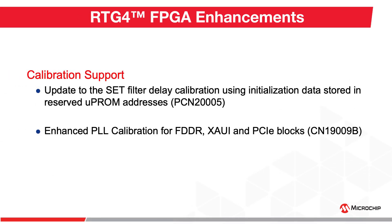There are a couple of RTG4 calibration updates with this release. The set filter delay calibration is updated using initializing data stored in reserved UPROM address. If the user is migrating their existing designs that contain UPROM to Libero V12.4, the complete design will be invalidated. Refer to PCN20005 for more details. The RTG4 PLL calibration logic is also updated for FDDR, ZOWE, and PCIe blocks.